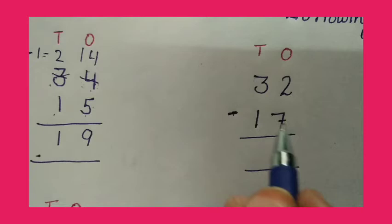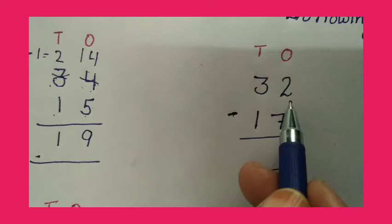In the next sum, we have to subtract 17 from 32. In the 1's column, we will subtract 7 from 2. Here we have to subtract 7 from 2, so this is a small number.